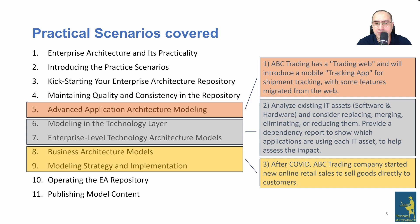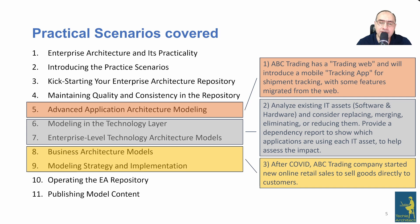For chapters eight and nine, the book was written in 2022 — after COVID — so the ABC trading company started a new online retail sales channel to sell goods directly to customers. These two chapters cover the business architecture model, including as-is and to-be scenarios. As you can see, any enterprise architect will be exposed to one of these three scenarios in their work, which makes the book very practical.